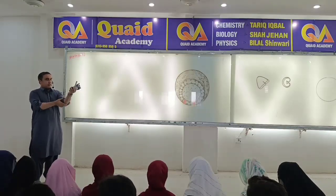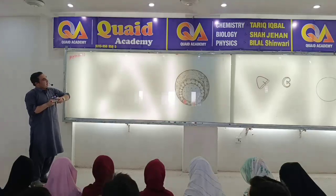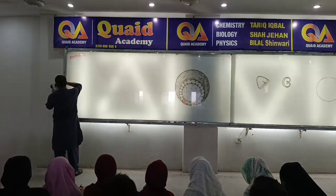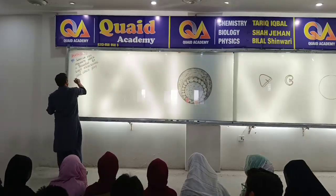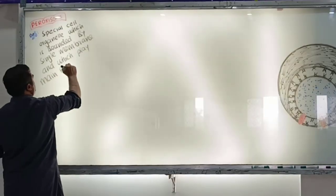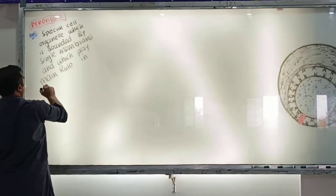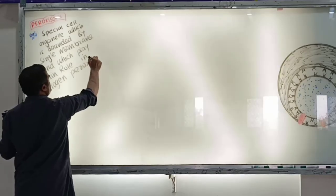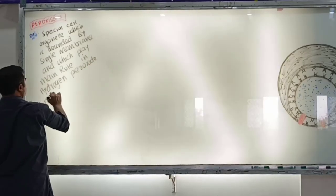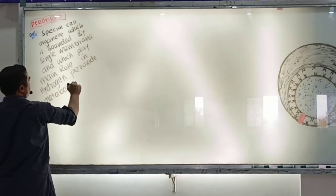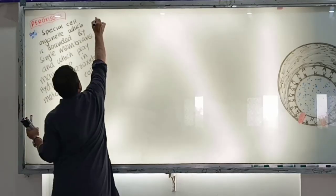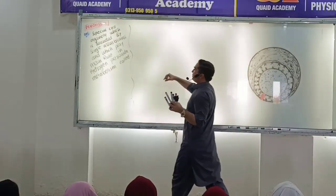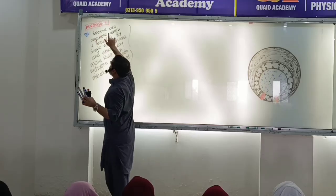The peroxisome — start of the peroxisome. The peroxisome is a special cell organelle. Its main role, the main role, is related to hydrogen peroxide. Hydrogen peroxide metabolism is carried out by this special cell organelle called the peroxisome.